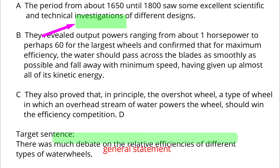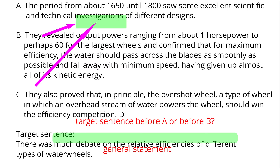C talks about another finding from the investigations. B and C are specifics, so the target sentence should come at least before B. To determine between before A and before B, we should look at the content. A talks about actual investigations on the debate, while the target sentence talks about speculative debates without any specificity. So, following the principle of moving ideas from general to specific, we should place the target sentence before A. When placed before A, the target sentence serves as an introduction about debates on efficiency, and A serves as a way to resolve the debate. So ideas flow naturally.